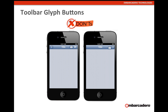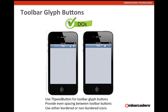For toolbar glyph buttons, here are some don'ts: mixing bordered and non-bordered icons on the same toolbar is incorrect. Cramming icons too close together and positioning them incorrectly is also wrong. In the do's example, you can see proper spacing — the toolbar icons are not cramped, they're all at the same x-coordinates, and they're consistently styled as either bordered or non-bordered glyph buttons throughout.